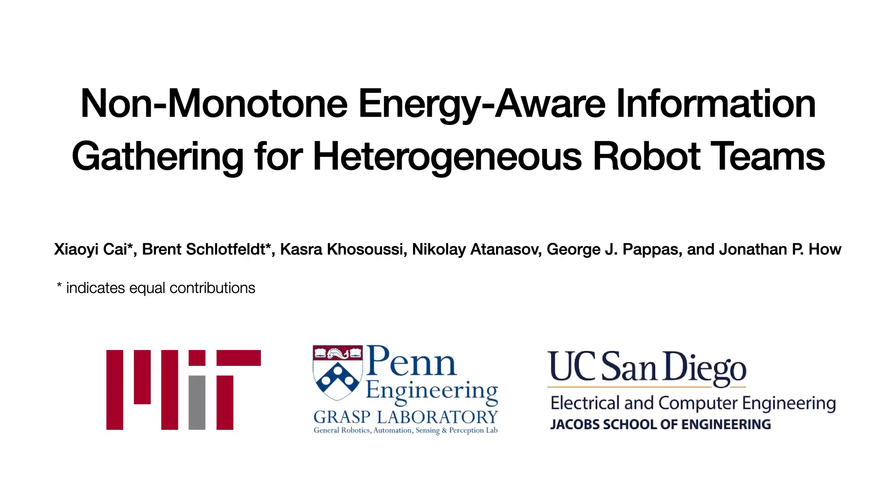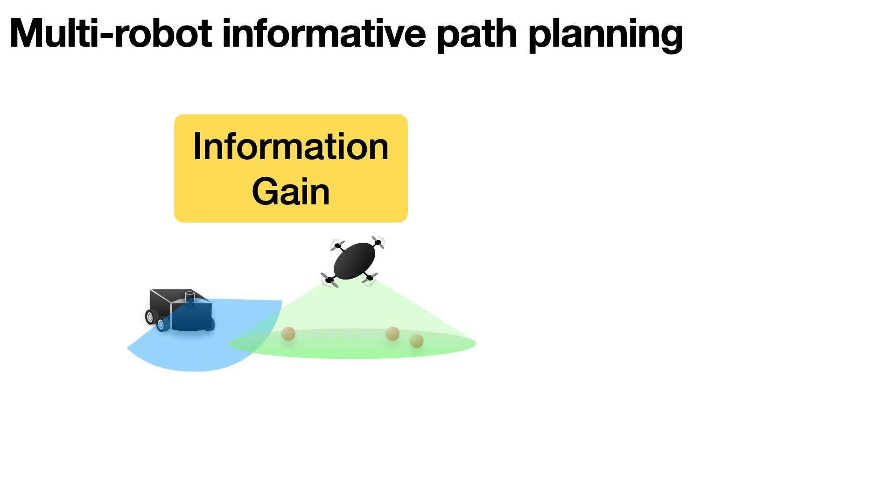This work considers the problem of planning trajectories for robots that are equipped with sensors in order to reduce uncertainty about a static or dynamic process.